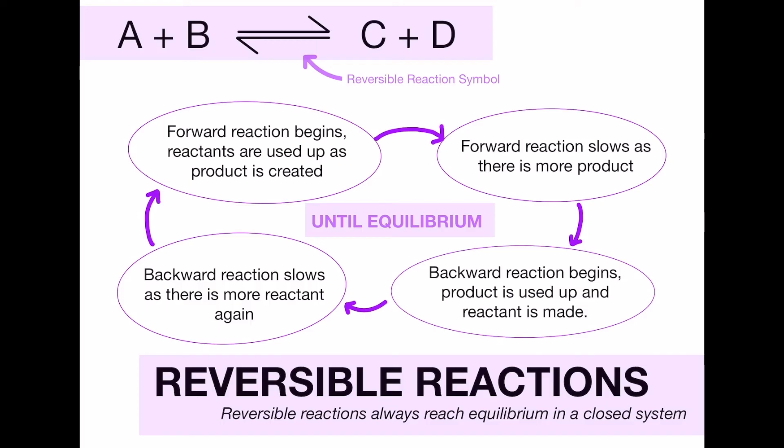The forward reaction then slows as there becomes more products, so once your reactant kind of gets used up the C plus D will become more and more, and because of this the backwards reaction then begins and the product is used up to make the reactants again. And again as the products are used up and the reactants become more again, the backwards reaction slows and then the whole cycle continues again and this will just continue going round and round until you finally reach equilibrium.